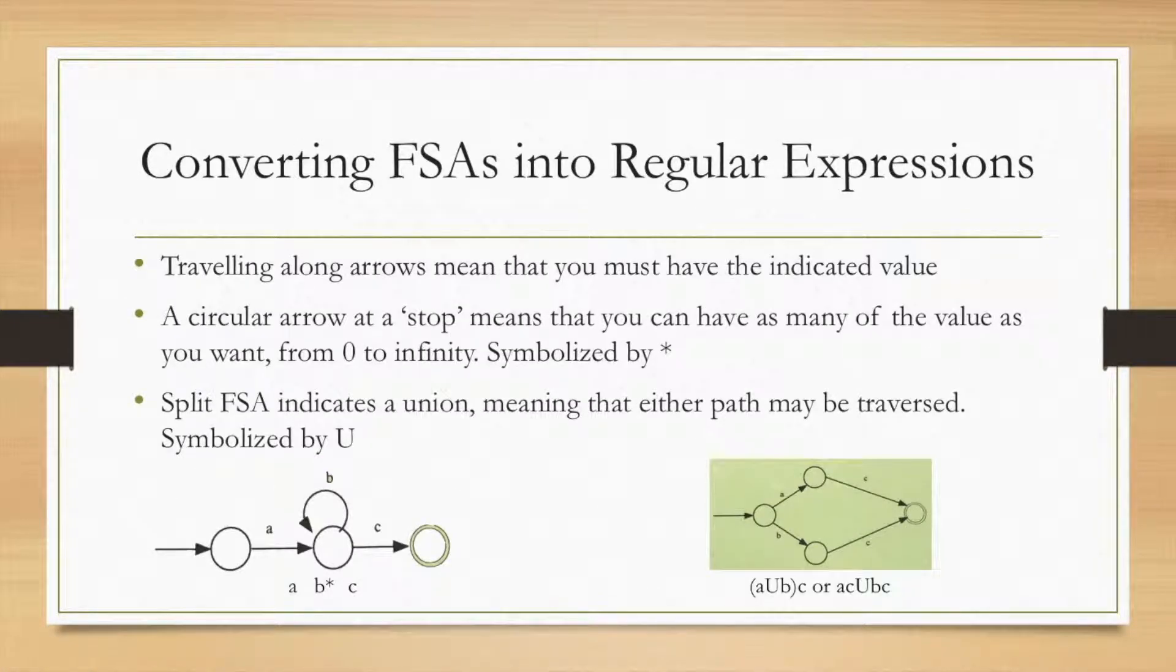Traveling along the arrows means that you must have the indicated value. A circular arrow at a stop means that you can have as many of the value as you want, from zero to infinity, and this is symbolized by a star. A split FSA means that either of the paths can be traversed to get to the final state, which again is that double circle, and that's going to be symbolized by union.